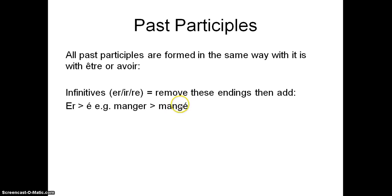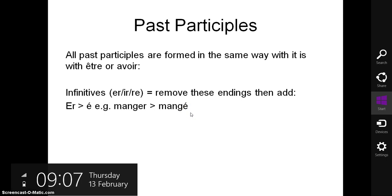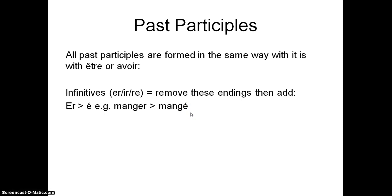Be careful how you pronounce this, because without the é accent on it, it would just be mange. So, mangé. Next one, an IR verb, it would be i on the end, for example finir would become fini. So finir to finish becomes finished. And RE, you take the RE off and add u, so for example vendre, to sell, becomes vendu.